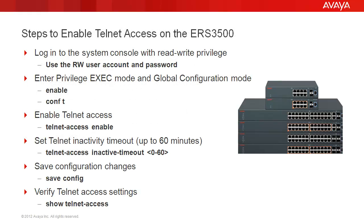We'll go through these steps to enable Telnet access on the ERS 3500. First, we'll log into the system with rewrite privilege using the RW user account and password. Then, we enter the privilege exec mode with enable and the global configuration mode with conf t. Then, to enable Telnet access, we use the command telnet access enable.